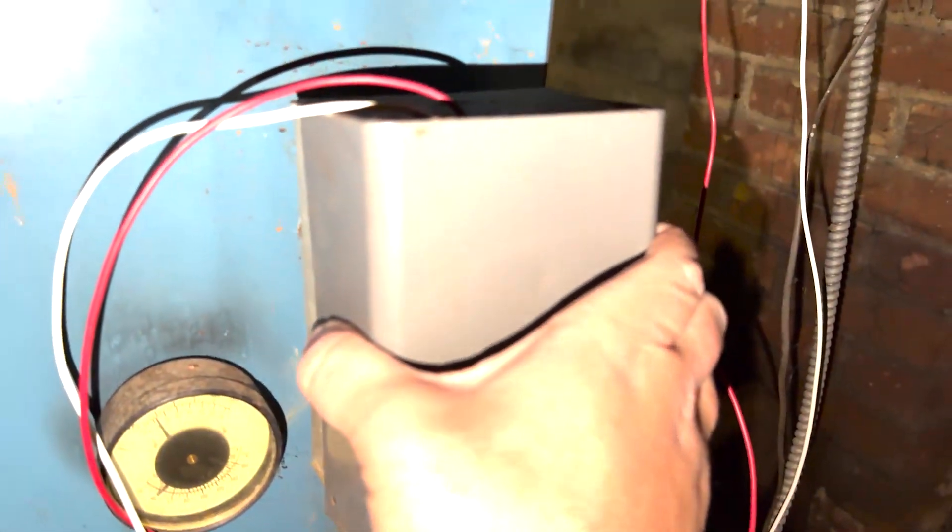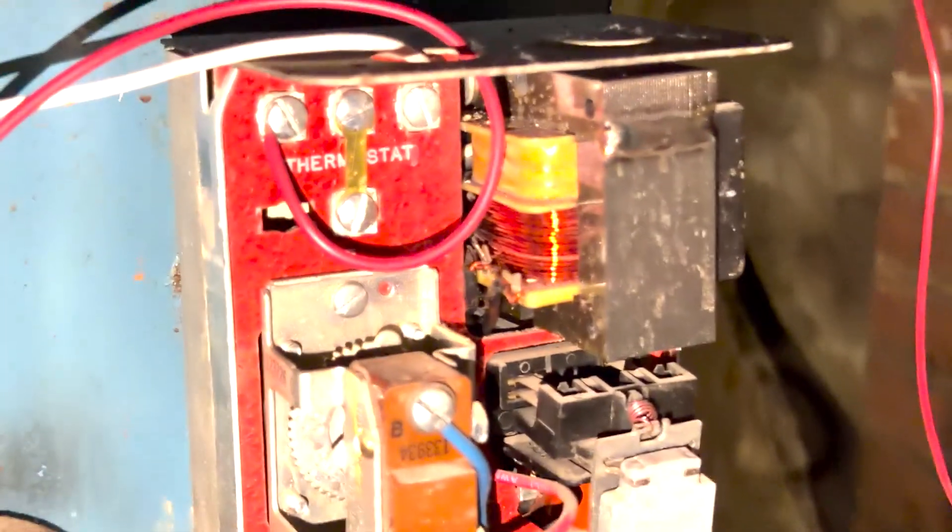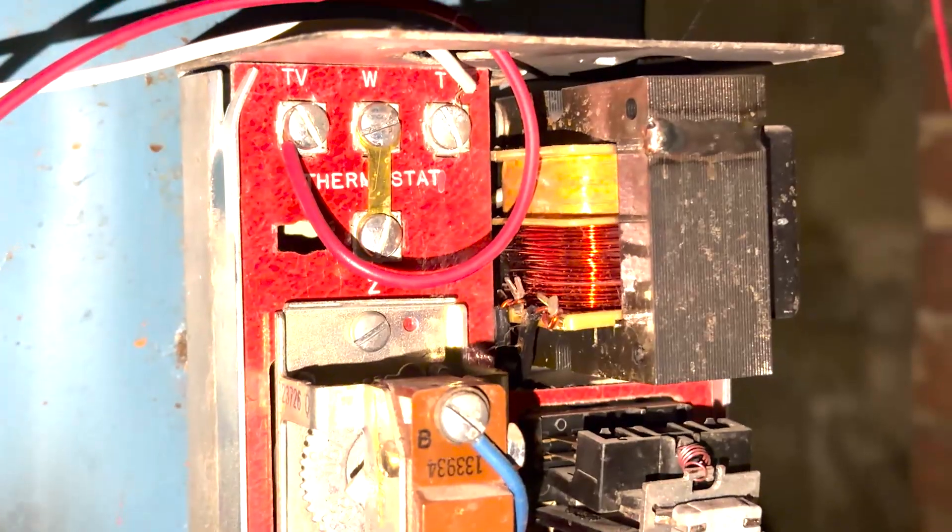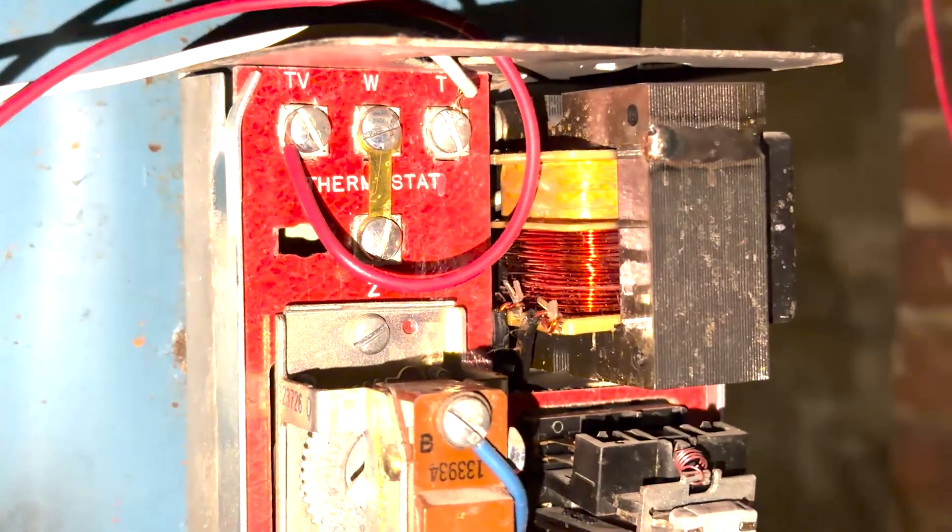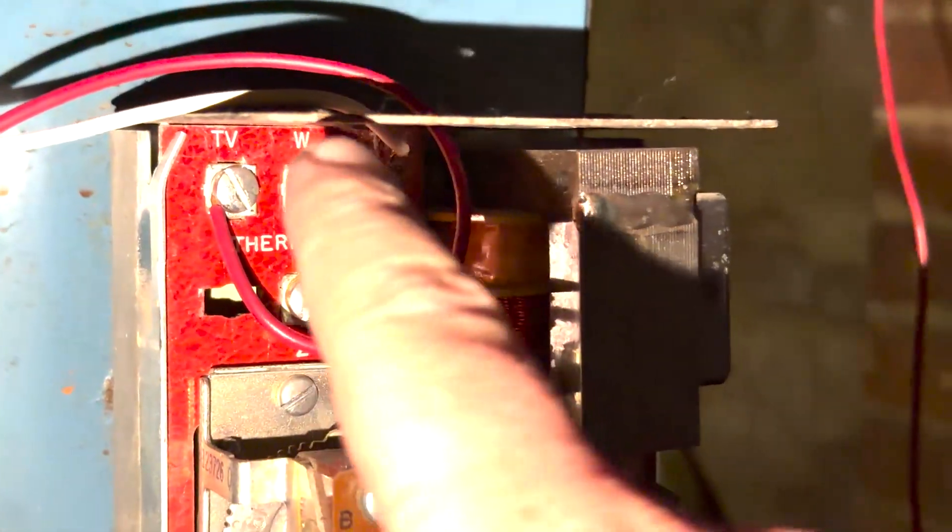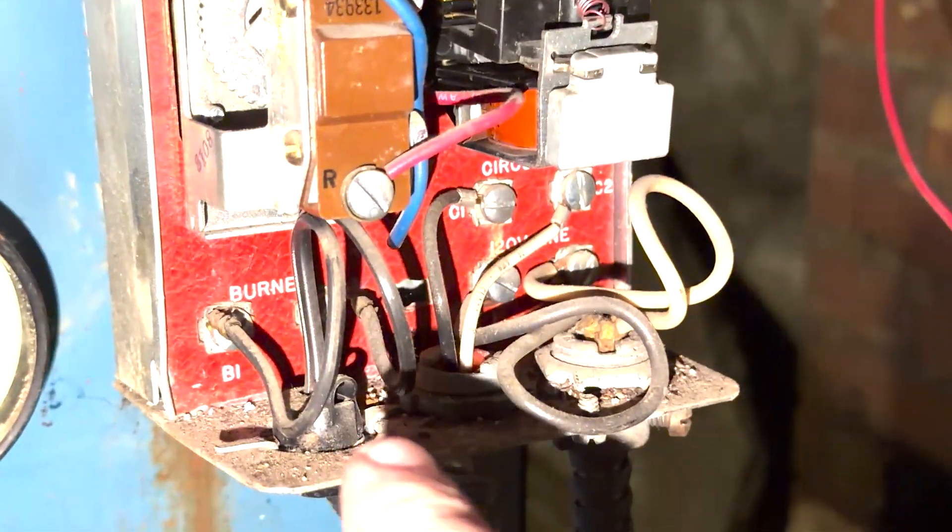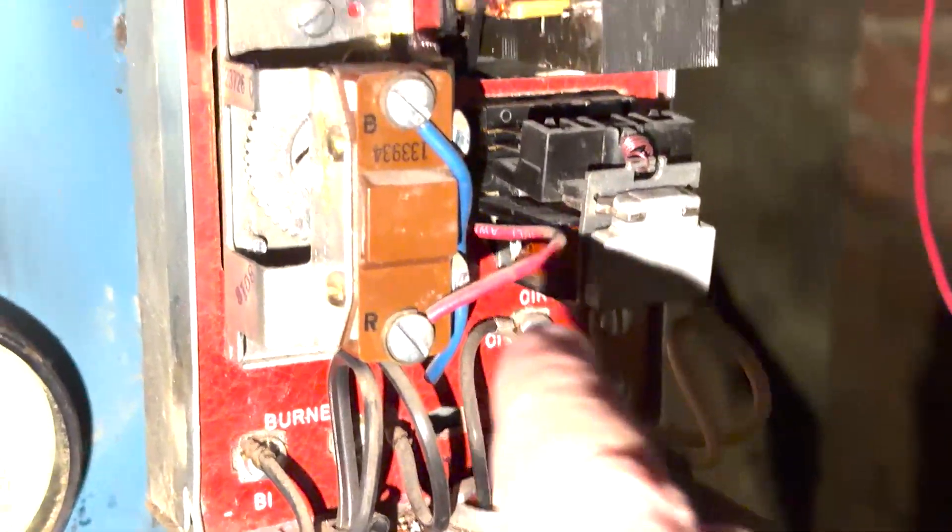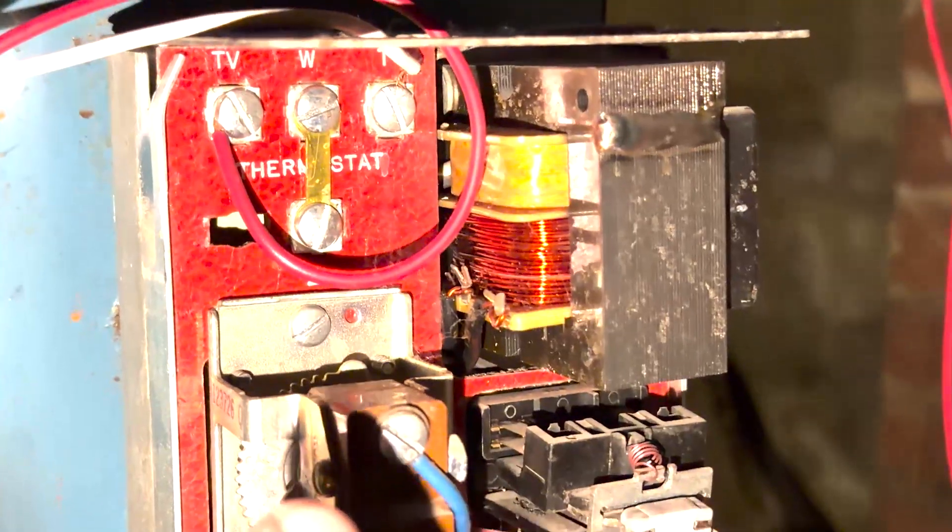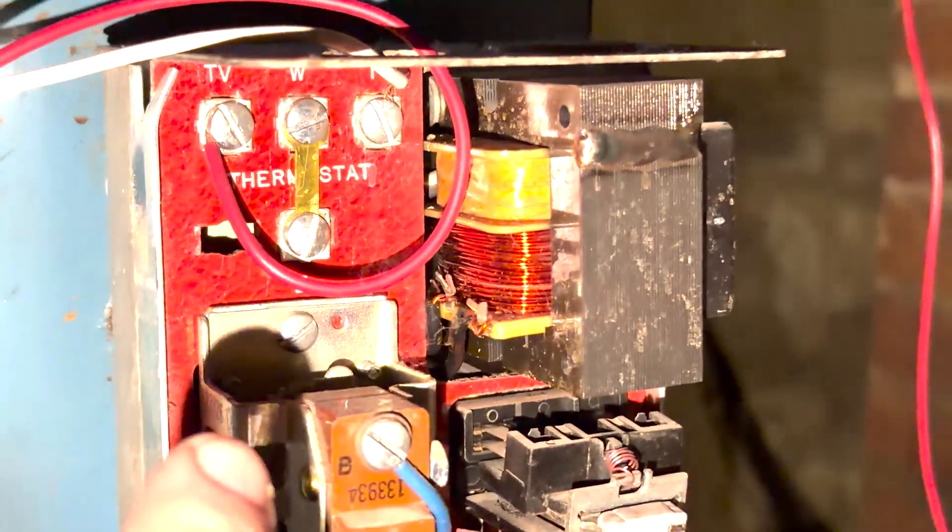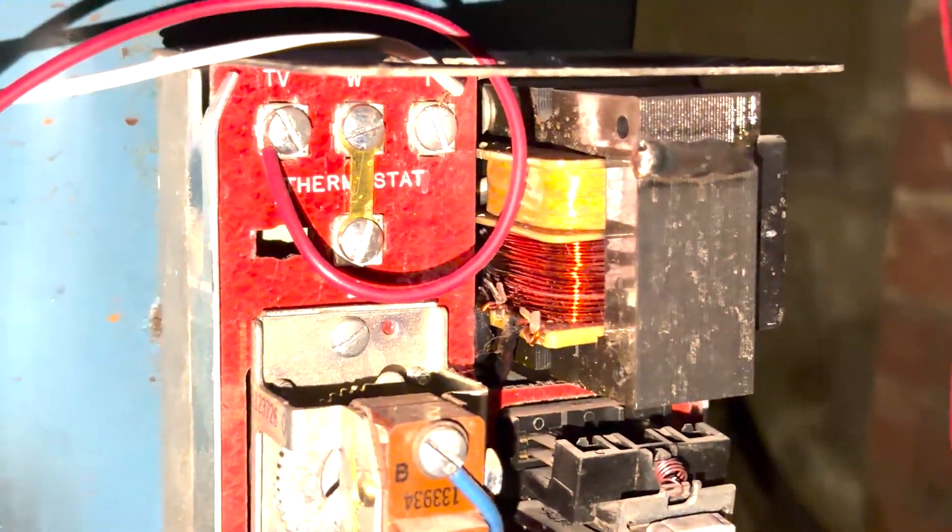So this is the Aquastat box and you'll notice when you look inside here that it doesn't look like your typical newer age models. These connectors are labeled differently and there's a whole bunch of other stuff going on here. The main important thing is that there is no C-wire that's going to come off of here which you need for the Ecobee.